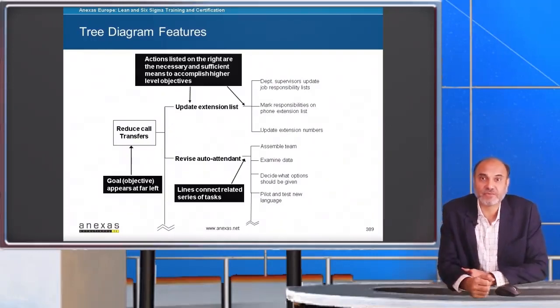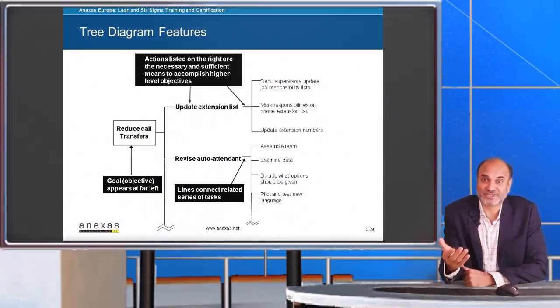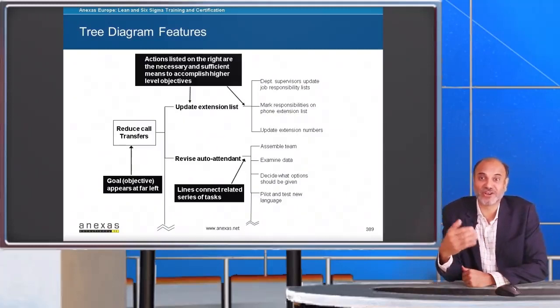To take an example, if I want to reduce call transfers, I can break them down into update extension list and revise auto-attendant. Update extension list can be further broken down into tasks like department supervisors would update the job responsibility lists.